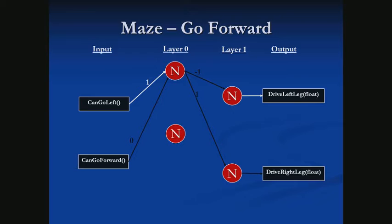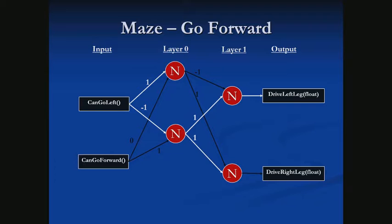Next, we need a neuron for deciding should we go forward. The output is simple: if it returns true, we power both legs to move the agent forward. For inputs, 'can go forward' is really important, so it gets a weight of positive 1. But we don't want to go forward if we can go left, so we connect 'can go left' with a weight of negative 1. That way, if 'can go left' is true, it cancels out 'can go forward,' and the should-go-forward neuron outputs 0.